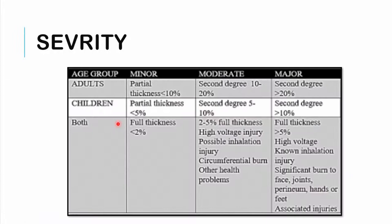Summary of severity classification: Minor burns — partial thickness less than 10% in adults, less than 5% in children, full thickness less than 2%. Moderate — second-degree 10–20% adults, 5–10% children, full thickness 2–5%, may include high-voltage injuries, possible inhalational injuries, circumferential burns, or other health problems. Major or severe — greater than 20% second-degree in adults, greater than 10% in children, or greater than 5% full thickness in both; any high-voltage burn, known inhalational injury, significant burns to joints, face, perineum, hands and feet, or any associated injury.